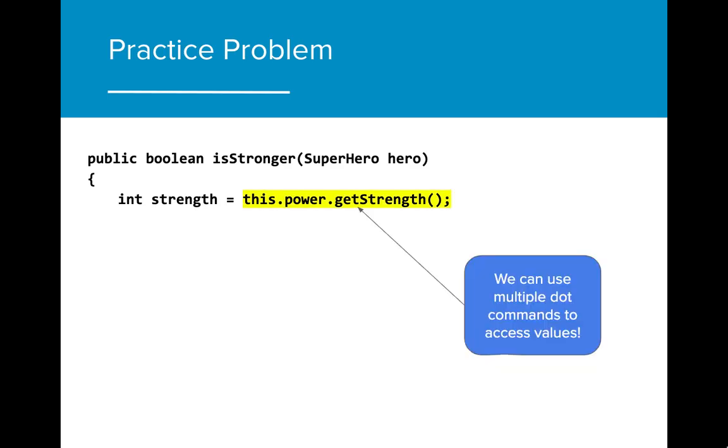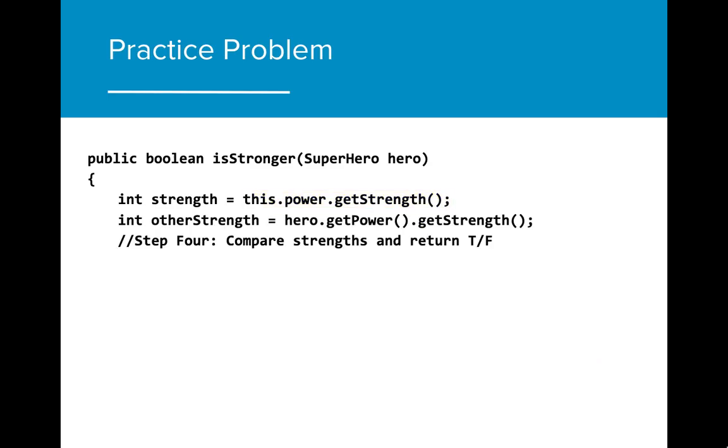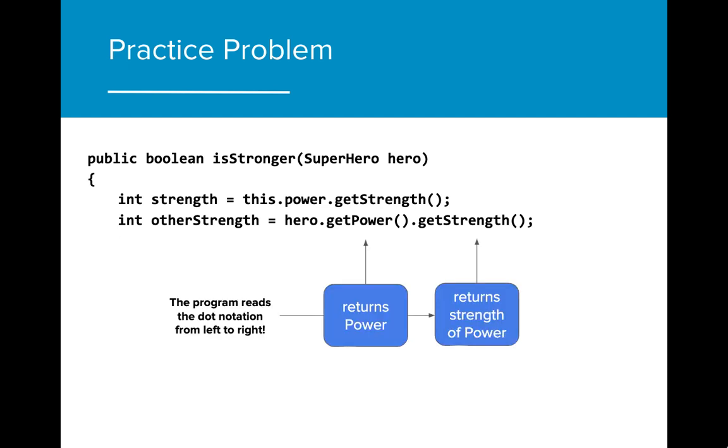It's important to note that we can make multiple dot calls in our programs. In this case, this.power.getStrength is calling the method getStrength on the this.power object. The next step is to find the strength of the other superhero and we can do that by creating another variable and storing the value hero.getPower.getStrength. This is using two different dot commands so let's explore this a little more. The program reads the dot notations from left to right.